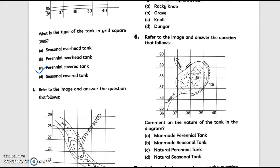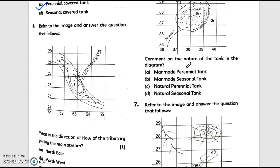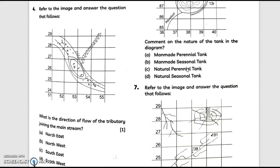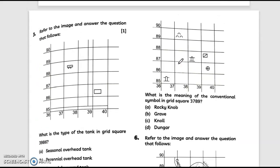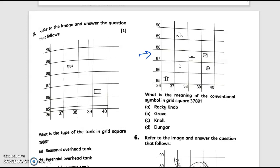Question number four: you can see this image and answer the question. What is the direction of flow of tributary joining the mainstream? Answer is southwest, option D. Question number five: what is the meaning of the conventional symbol in grid square 3789? 3789 is a grave.